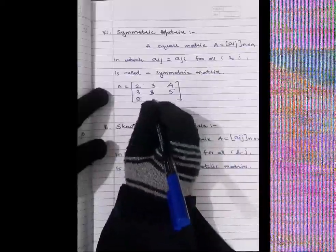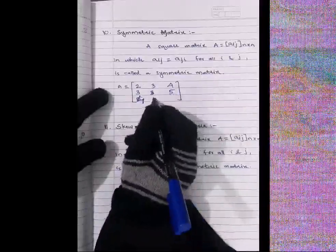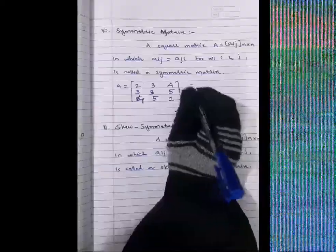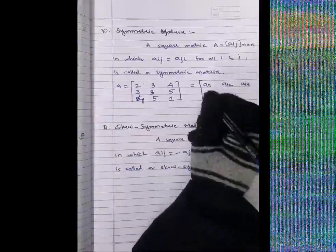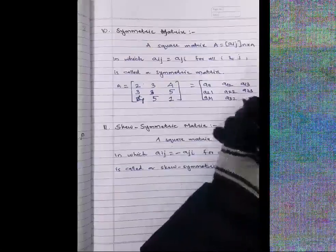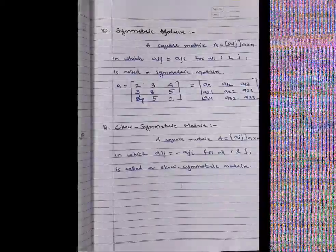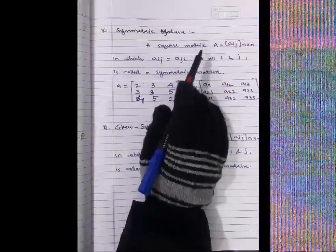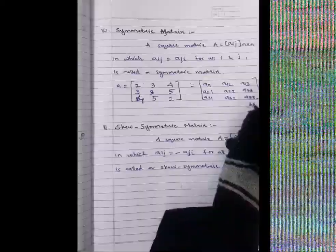In the example, the diagonal elements are 2, 3, 1. For non-diagonal elements: A₁₂ = A₂₁ = 3 (same value), A₁₃ = A₃₁ = 4 (same value), and A₂₃ = A₃₂ = 5 (same value). Since A₁₂ = A₂₁, A₁₃ = A₃₁, and A₂₃ = A₃₂, this matrix is called a symmetric matrix.